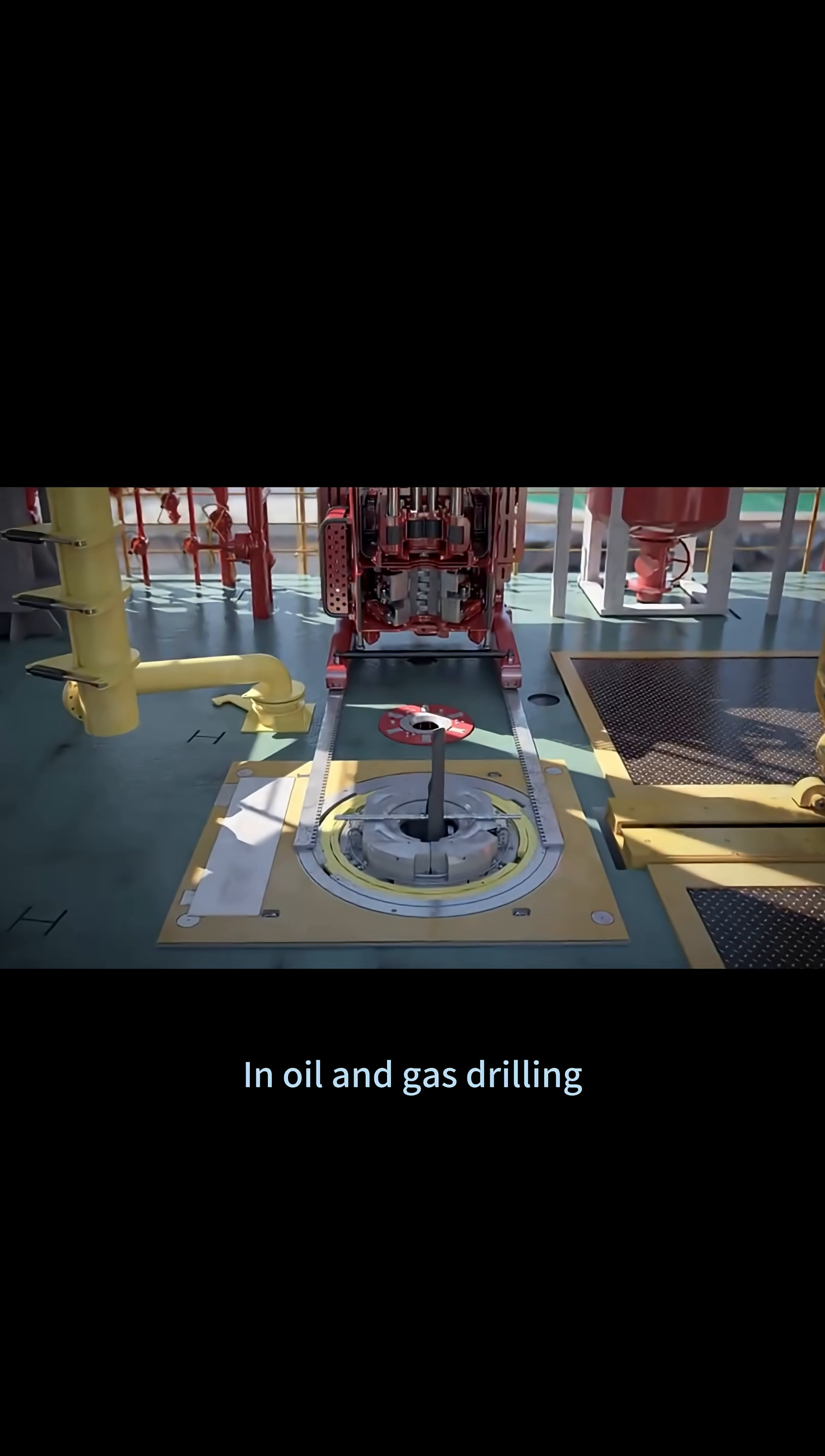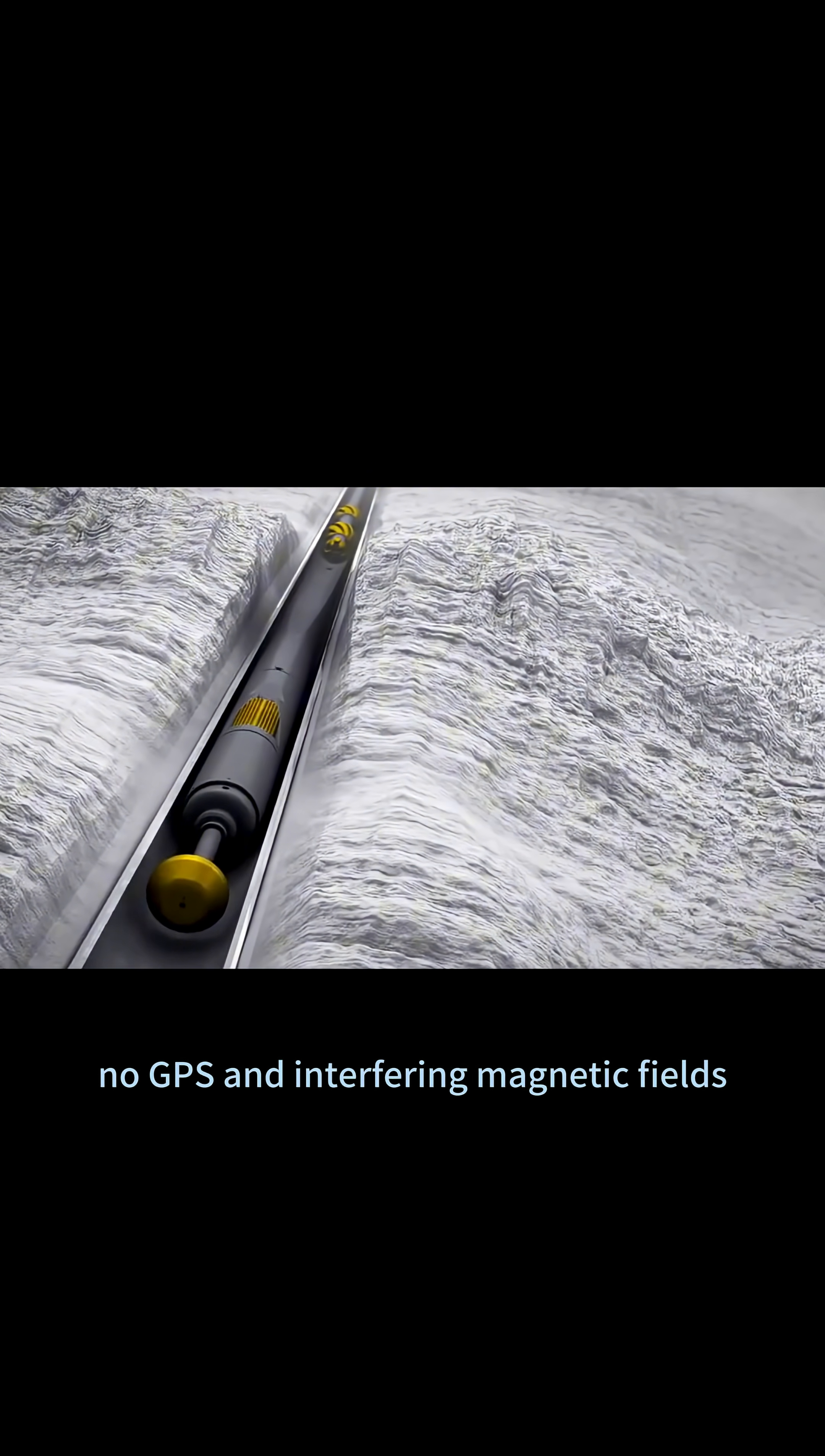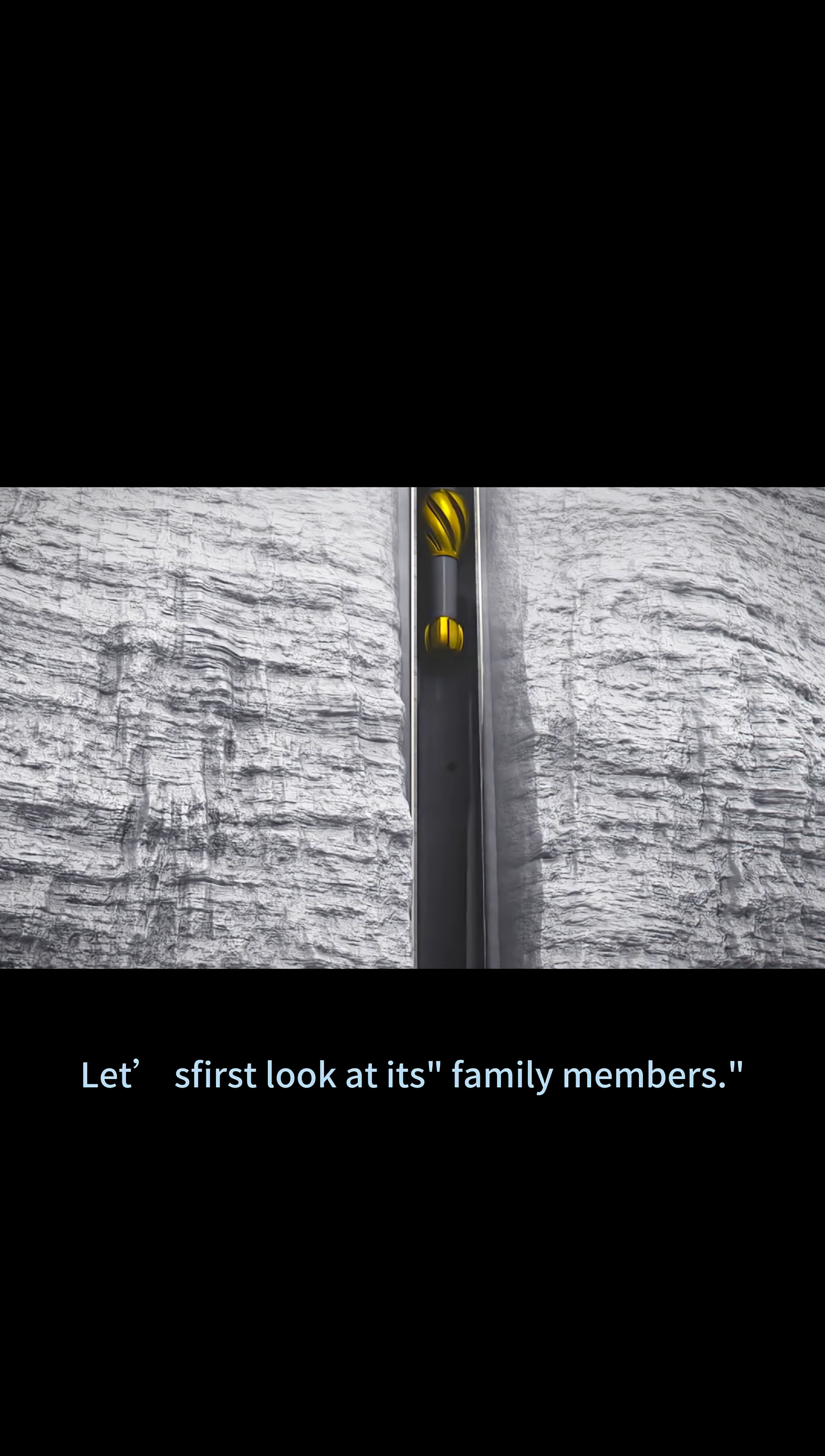In oil and gas drilling, drill bits wind through underground hundreds to thousands of meters with no GPS and interfering magnetic fields. A gyro, an absolute non-magnetic direction reference, is needed. Let's first look at its family members.